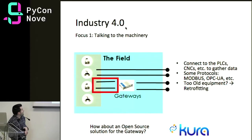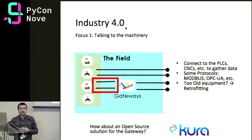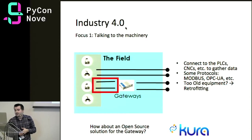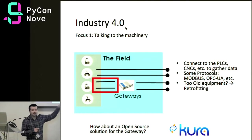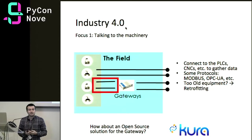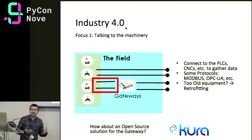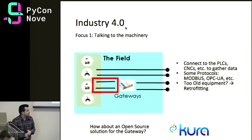Let's focus on the field component. A physical device can connect to a gateway if it cannot connect directly to the internet. The gateway talks to the machine using standard protocols like Modbus, OPC, and OPC UA — connecting to the PLC or CNC, which has onboard intelligence but cannot talk to a remote server. For very old equipment, we can also go for retrofitting, upgrading the hardware side.